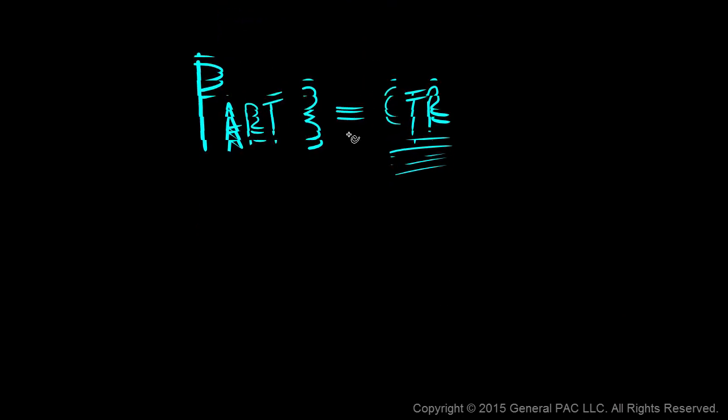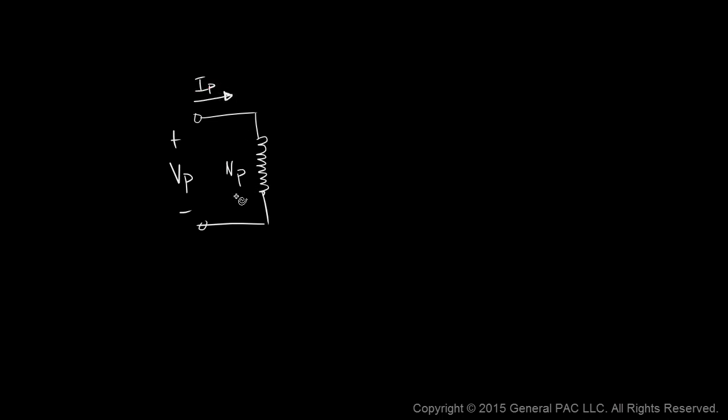Let's begin by drawing an ideal transformer. An ideal transformer has a primary winding with a voltage across the primary winding defined as Vp, the number of primary turns, and current flowing into the primary winding.